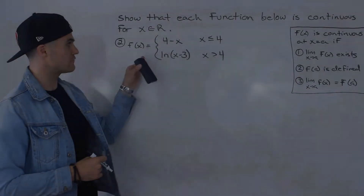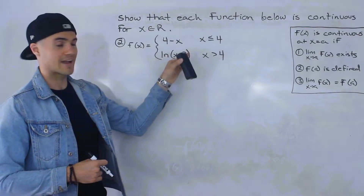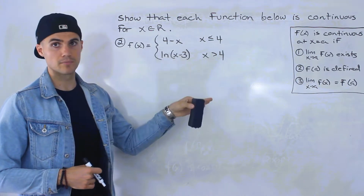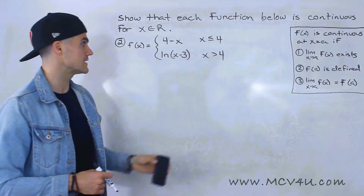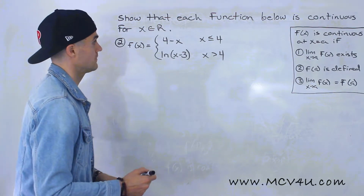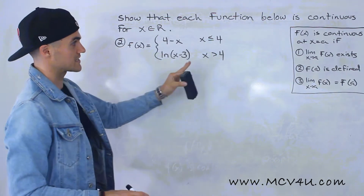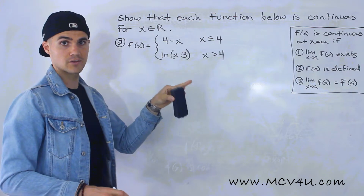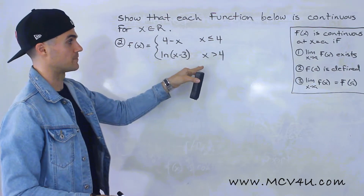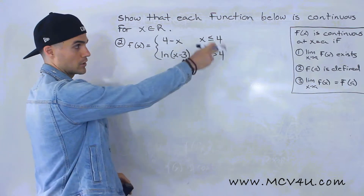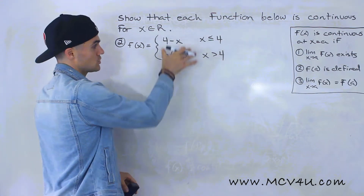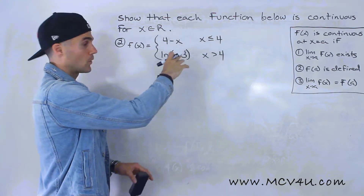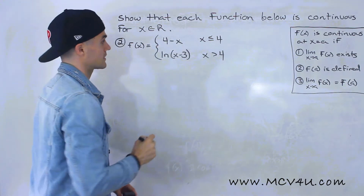Moving on to number two, we have f of x equals 4 minus x when x is less than or equal to 4, and ln of x minus 3 when x is greater than 4. I'm going to go through the exact same process as the first piecewise function — dealing with x values less than 4, x values greater than 4, and then x values equal to 4, using the definition of continuity to show that these two pieces make the whole piecewise function continuous.